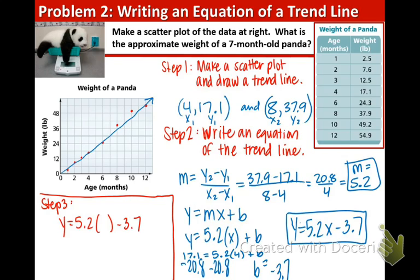So we have step 3, we're going to estimate the weight of 7-month-old panda, and that means we're plugging in the 7 for the x. And when we do our math, we get 36.4 minus 3.7, and that equals 32.7. So the weight of a 7-month-old panda is about 32.7 pounds.